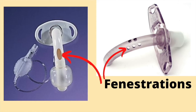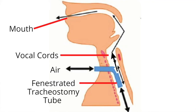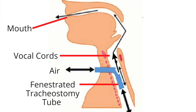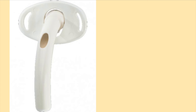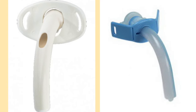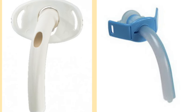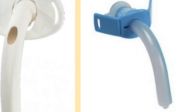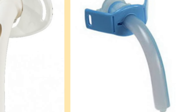A fenestrated tracheostomy tube has a small hole or multiple holes in the shaft of the tracheostomy tube. These openings allow for increased airflow up the airway and out the nose and mouth. In order to understand how a fenestrated tracheostomy tube works, it is important to first discuss how a person breathes with a non-fenestrated tracheostomy tube in place.